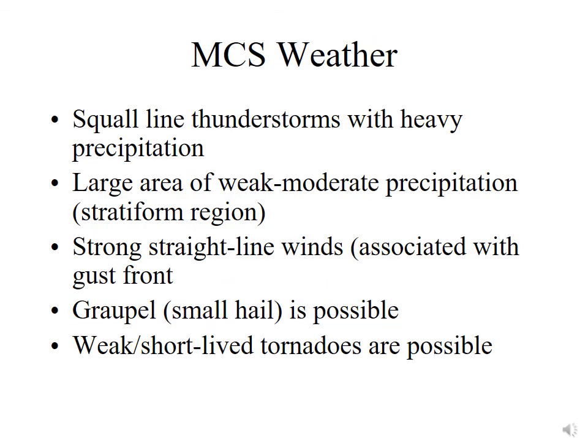Weather associated with the MCS: the bow echo and squall line thunderstorms along the leading edge are very severe with heavy precipitation. There is a large area of weak to moderate stratiform precipitation that can rain for hours. You can have strong straight-line winds associated with the gust front on the leading edge. They can produce graupel or small hail. And they can also produce weak or short-lived tornadoes at about the same frequency and type as multi-cell thunderstorms.